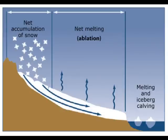Accumulation is defined as when snow and ice gather in the glacier during the winter, allowing the glacier to grow. Ablation is defined as the removal of snow and ice from a glacier by melting or evaporation during the summer, causing the glacier to shrink. The difference between accumulation and ablation is the glacial budget.